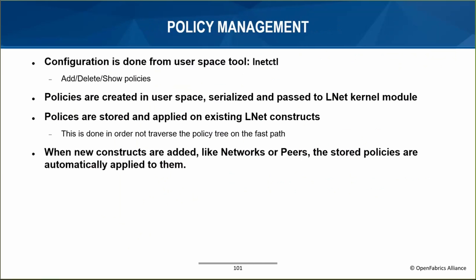Adding, deleting, and showing network selection policies can be done through the lnetctl utility. Policies are serialized and sent to the LNet kernel module where they are applied on the existing constructs. The idea is not to look up rules on the fast path; rather, rules are programmed into LNet's data structures so the selection algorithm makes decisions based on them without policy lookups. When a rule is added or deleted it is done on the slow path and data structures are updated accordingly. When new peers or interfaces are added on demand, the stored policies are traversed and applied on the new data structure.